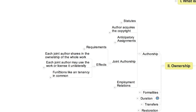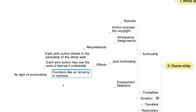When a joint author dies, his or her interest passes to his or her heirs, not to the other joint authors. In this respect, joint authorship in copyright law works like a tenancy in common in real property law, not like a joint tenancy. The main difference between those two legal forms is that the latter carries with it a right of survivorship while the former doesn't.